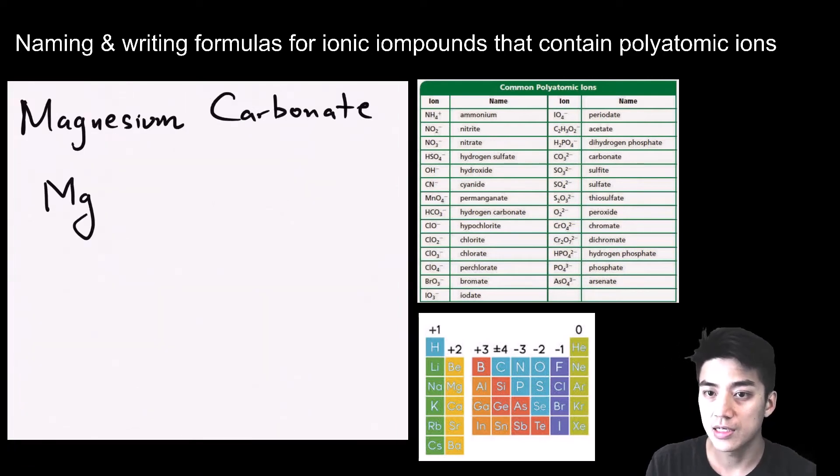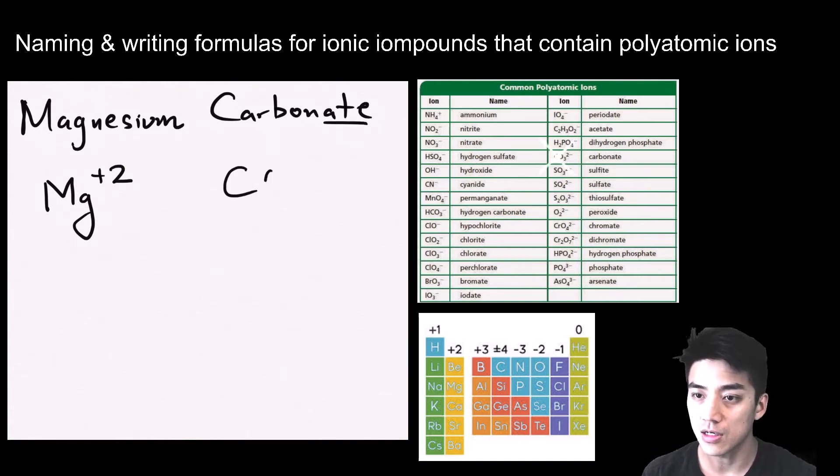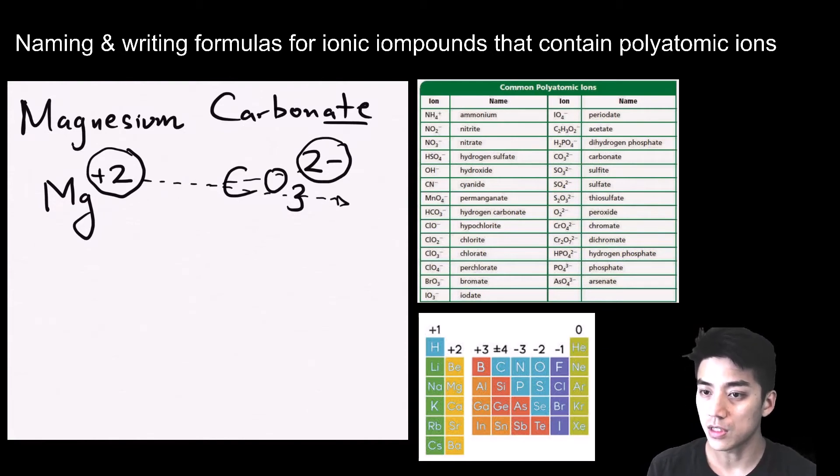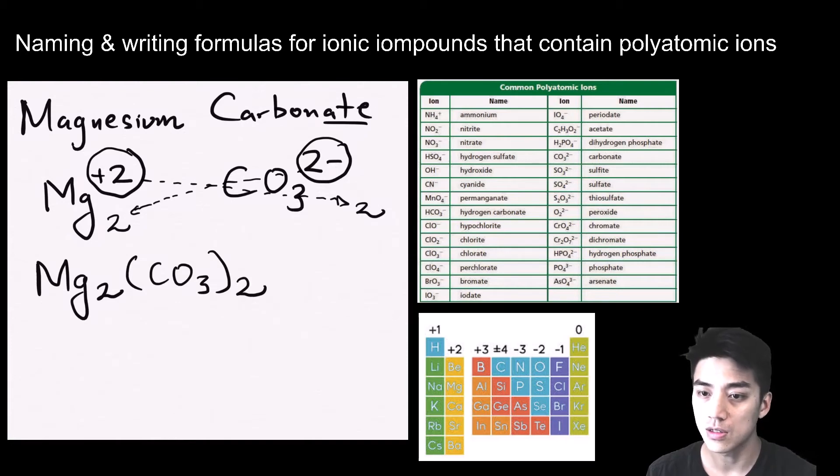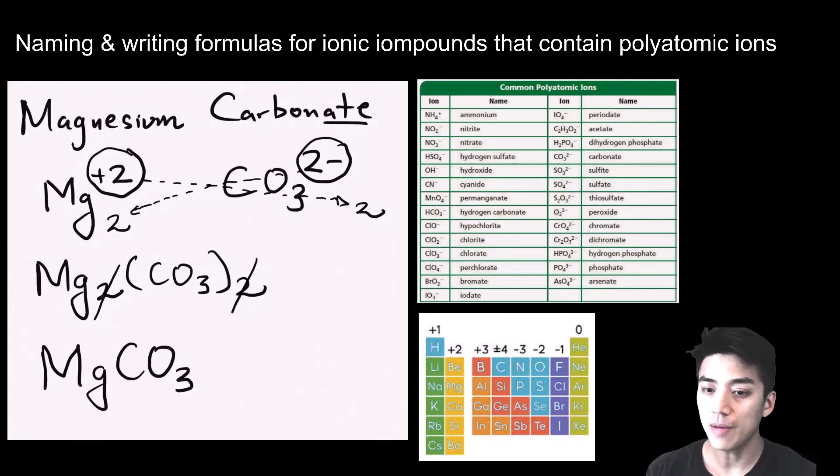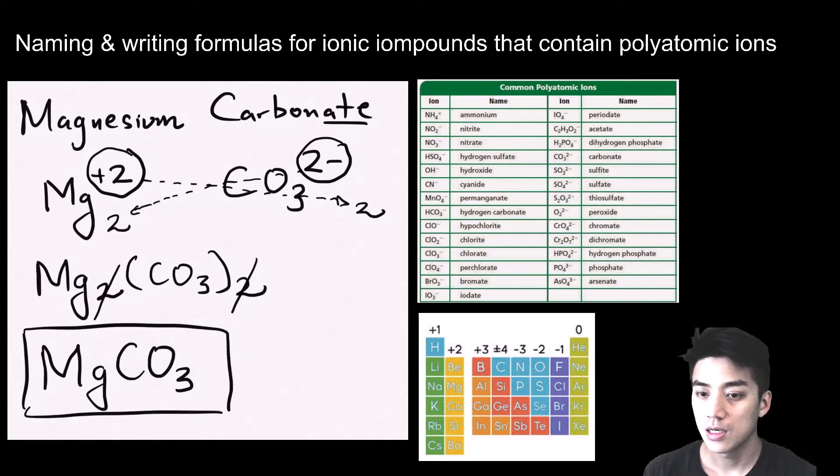Let's try magnesium carbonate. Magnesium is a plus 2 charge. Carbonate is CO3 with a negative 2 charge. I'm giving you an example where the charges are the same, so eventually they will simplify. After crisscrossing, you get Mg2(CO3)2, and they simplify to a 1-to-1 ratio. Close the gap, and now you just call it MgCO3 for magnesium carbonate.